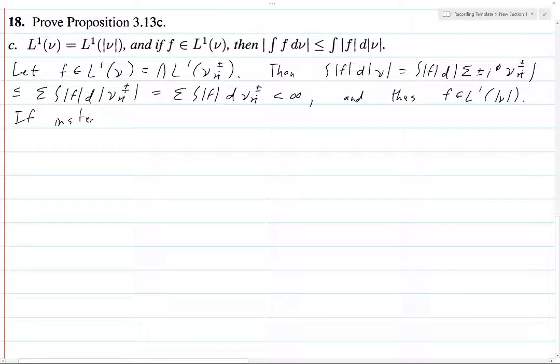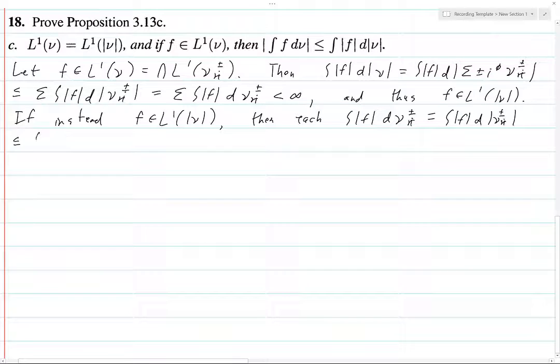If instead we suppose that F is in L^1(|ν|), then each integral over F dν_{ri}^{±}. And by here I mean for every single combination of r or i and plus or minus here, we can write this as being equal to the integral over F of... Of course, you just put the absolute value there because it's positive, so that makes absolutely no difference. But then certainly this is going to be less than or equal to the integral over |F| d, and then if we make this sum bigger by adding more parts to it.